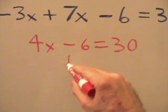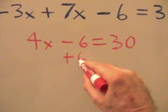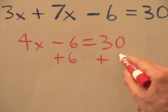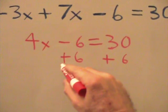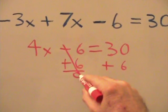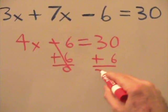So we add 6 here. We add 6 here to 30. This will cancel each other out. 30 plus 6 is 36.